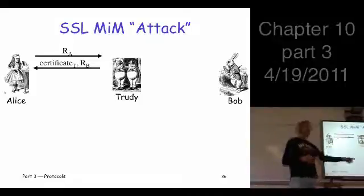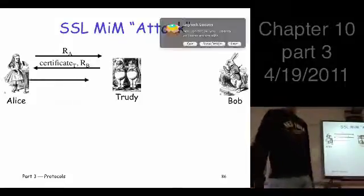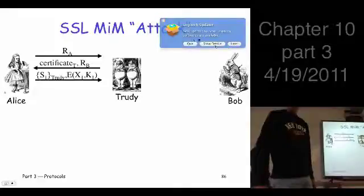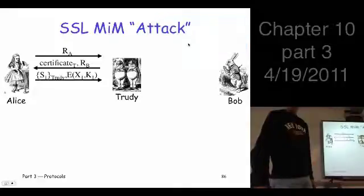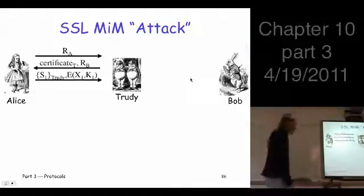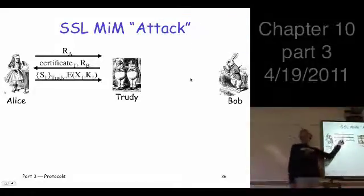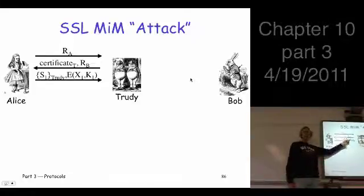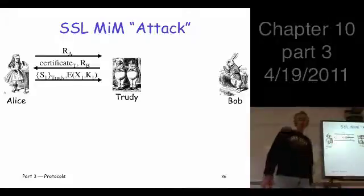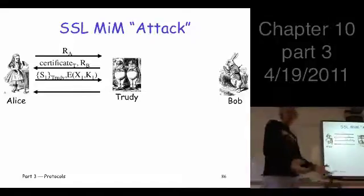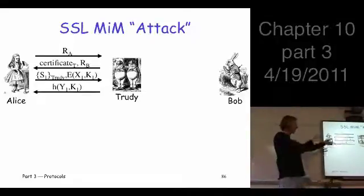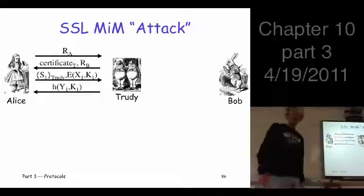She sends her certificate and her nonce back to Alice. Alice chooses a pre-master secret, encrypts that with Trudy's public key, and then computes this hash thing and encrypts it with the key and sends that back. Trudy then gets that pre-master secret. She can compute K. She sends that back. Now Alice thinks she's talking to Bob.